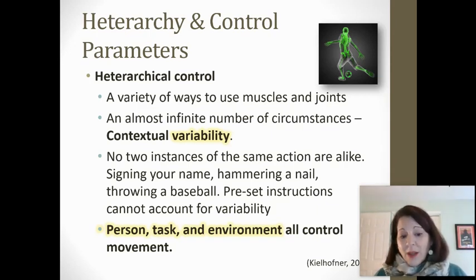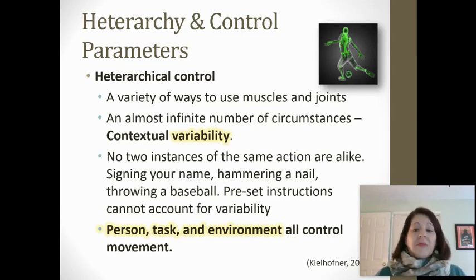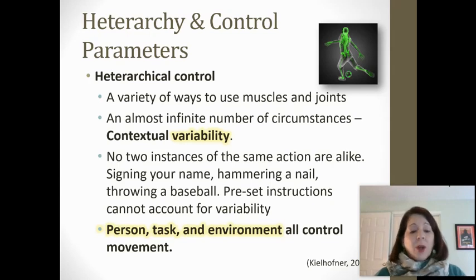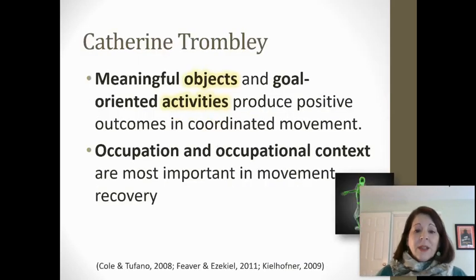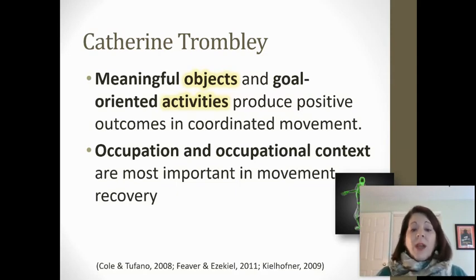Why is a baseball game interesting? Because we never know what will happen when the pitcher throws the ball — there's an infinite number of circumstances: the fatigue they have, the position of the batter, the way they happen to be standing. The person, the task, and the environment all control the person's movement. Catherine Tromley says this is best facilitated through meaningful objects and goal-oriented activities. To get positive outcomes with coordinated movement, we have to make it meaningful — the occupation and occupational context are most important in movement recovery.